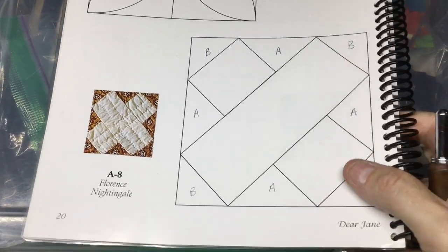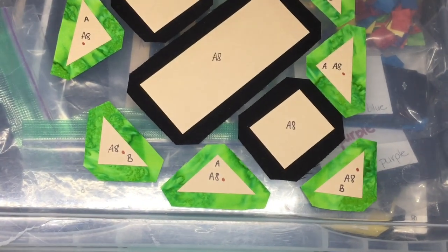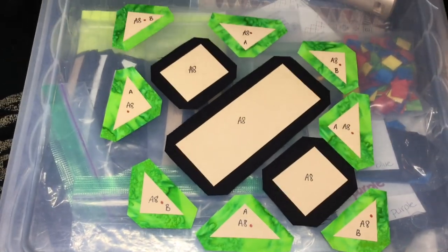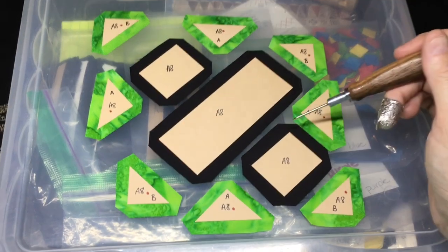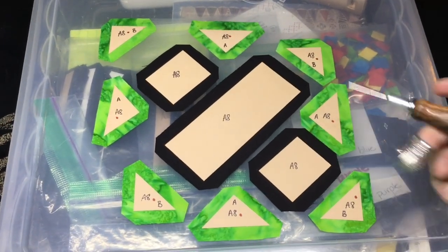So I got my pieces here, like normal, and my rectangles. I'm going to do the short sides first, then the long sides. Squares, I'm going to do opposite sides, then opposite sides.